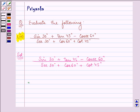Now let's proceed. We have sin 30 as 1 by 2 plus tan 45 as 1 minus cosec 60 as 2 by root 3.